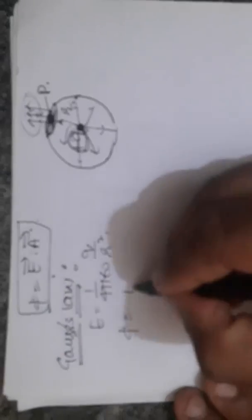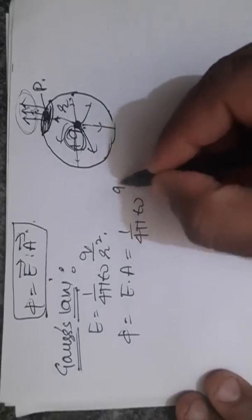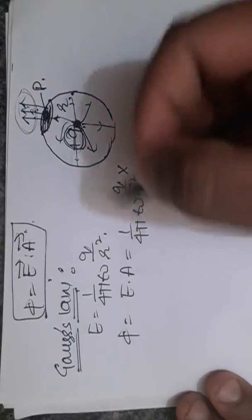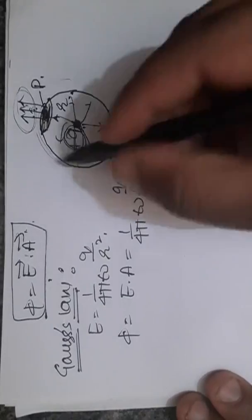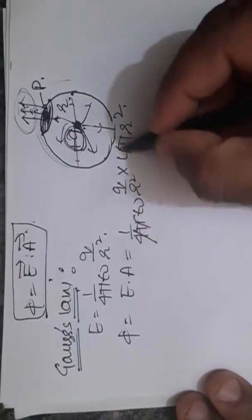So let us solve phi equal to E vector dot A. Since both are in the same direction, theta 0, put the value of E, 1 by 4 pi epsilon_0 q by R square. What is A? Now A is the area of this surface. And area of this sphere is 4 pi R square. 4 pi cancel out R.